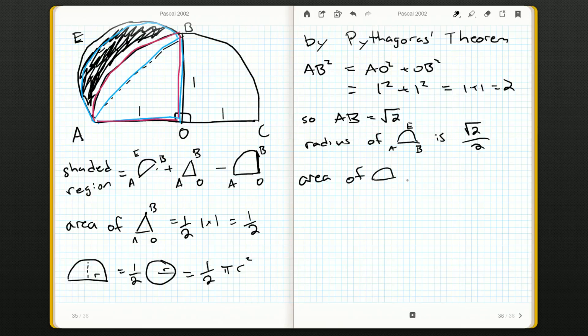So the area of my semicircle is one-half pi r squared. What's r? It's root two over two. So one-half pi times root two squared is just two, over two squared which is four. We're left with two over eight pi, and that's just one-quarter pi.